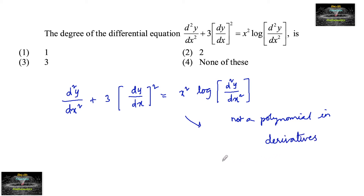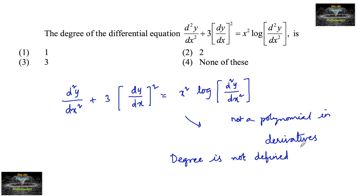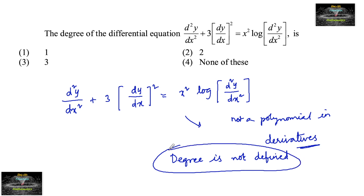In such cases, degree is not defined. Since we have on the RHS log of d²y/dx², this is not a polynomial in derivatives, and hence degree is not defined for this equation. Hence, we can go with option 4: it is not defined.